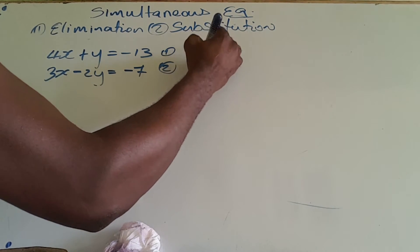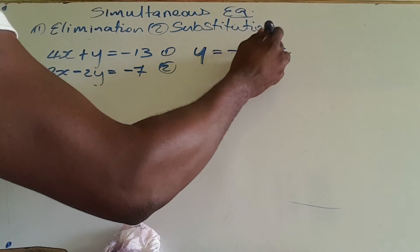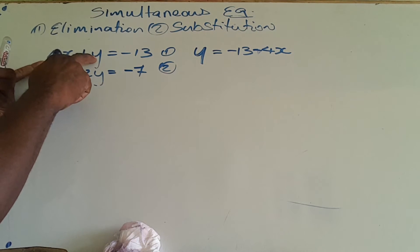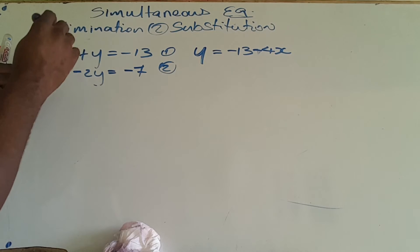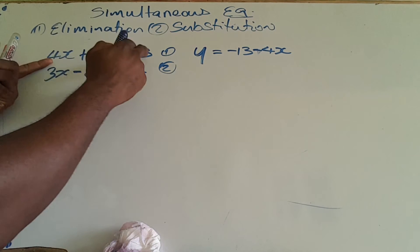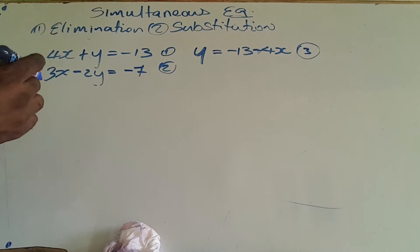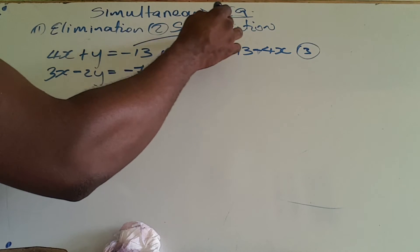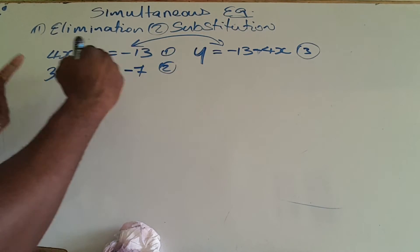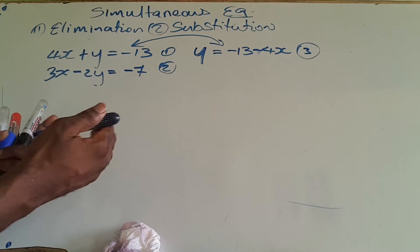Therefore, equation 3 says y is equal to negative 13 minus 4x. I take equation 1, rewrite it, and let y be the subject by subtracting 4x from both sides. Equation 1 and equation 3 are the same thing — I've just changed the subject of the formula.